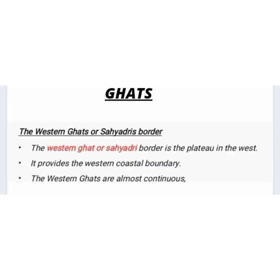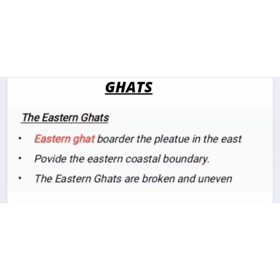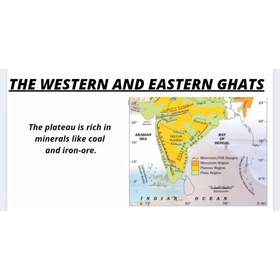Now we will study about the Ghats. The Western Ghats, or Sayadri, border the plateau in the west, providing the western coastal boundary, and are almost continuous. The Eastern Ghats border the plateau in the east, providing the eastern coastal boundary, but the Eastern Ghats are broken and uneven. The plateau is rich in minerals like coal and iron ore.